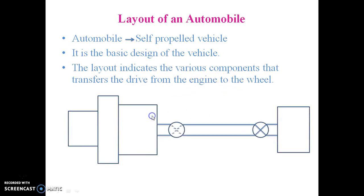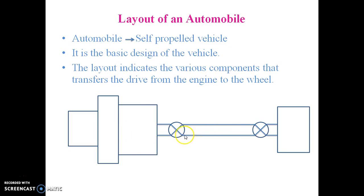The basic layout of an automobile mainly consists of the engine, then the clutch, then the gearbox, then the propeller shaft with universal joints, and then the differential. So this is the basic layout of an automobile.